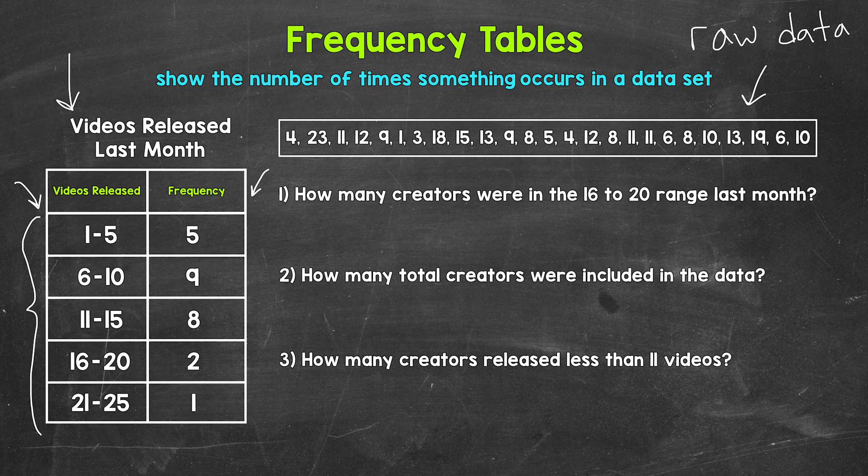So for example, taking a look and reading this table, how many creators released 1 to 5 videos last month? Well, 5 creators. How about 6 to 10 videos? Well, 9 creators. 11 to 15 videos? 8 creators. 16 to 20 videos? 2 creators. And then 21 to 25 videos? 1 creator.